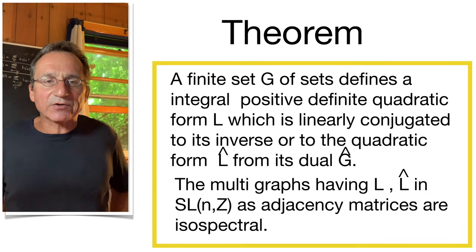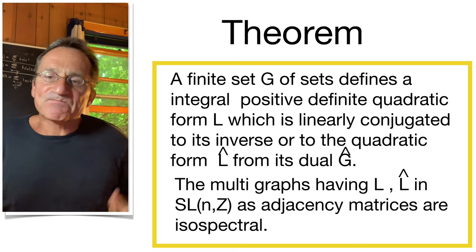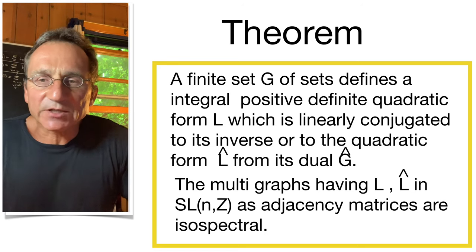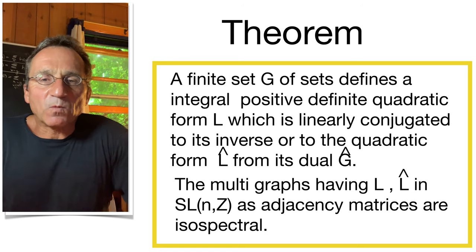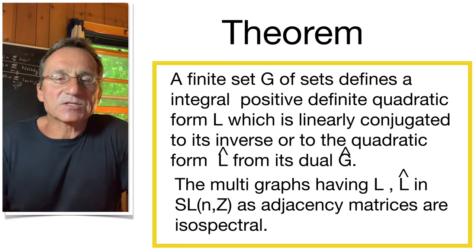So here's a general theorem. A finite set of sets defines two isospectral matrices, L and L-hat, which are integral quadratic forms with determinant one, and the corresponding graphs are isospectral.